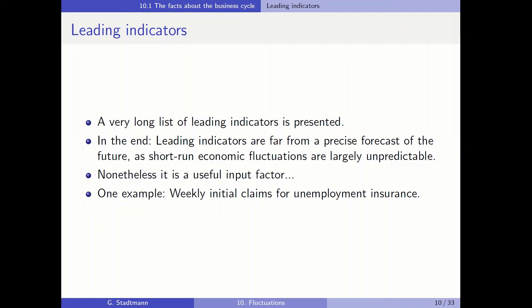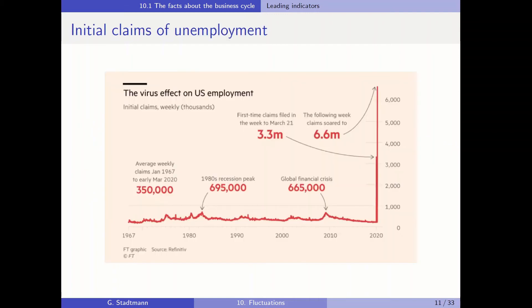One example of a leading indicator is the weekly initial claims for unemployment insurance — how many people become unemployed within one week and file for unemployment support. The following graph from the Financial Times shows initial claims in the US. In the financial crisis of 2008-2009, the highest number was 665,000. But in the most recent Corona crisis, in one week 6.6 million Americans became unemployed — a very huge number not seen before.